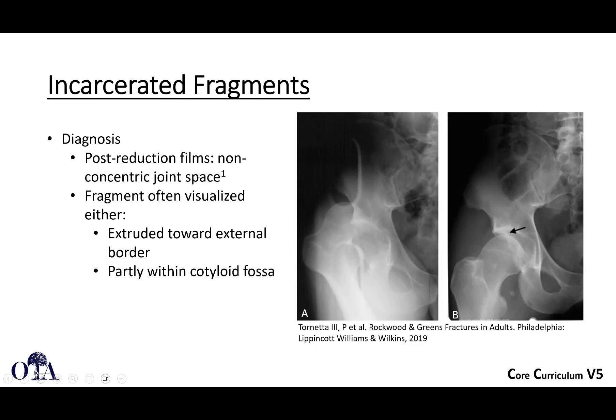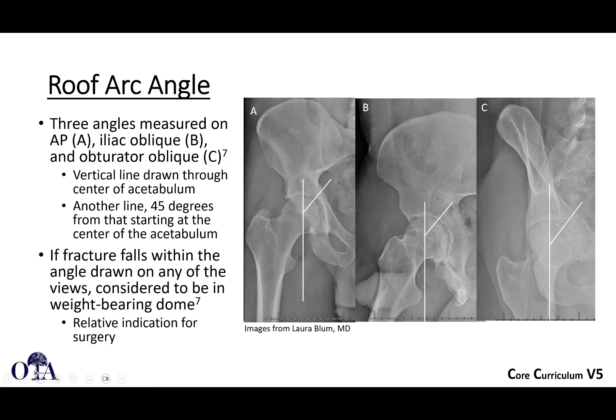Marginal impaction is definitely better seen on CT scan. Incarcerated fragments can occur when you have a hip dislocation, you reduce it, and the head is still not concentrically reduced — maybe because there's still an incarcerated fragment shown by that black arrow, which may prevent concentric reduction. Roof arc angles are another way to identify where the fracture is. You measure these on all three views: draw a vertical line through the center of the acetabulum, then another line 45 degrees from that, starting at the center. If the fracture falls within that angle on any of the views, it's considered to be in the weight-bearing dome, indicating a more transtectal fracture, which is more of an indication for operative management.